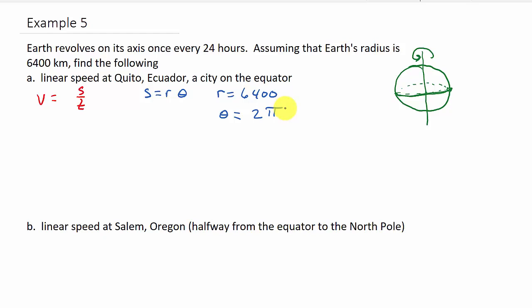Now, since we've got R and theta, we can get S is 6400 times 2 pi. So S is 128000 pi. That's S.